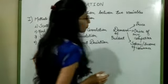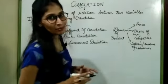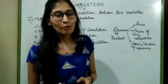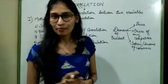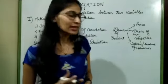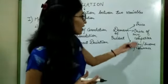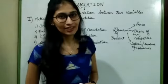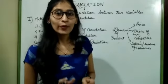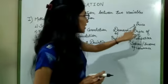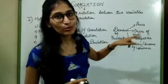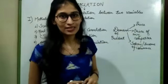The price of my product should be reasonable so that the common man can purchase it. There are various other reasons. So correlation is the relation between any two variables.